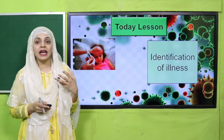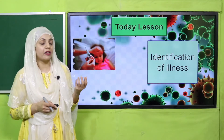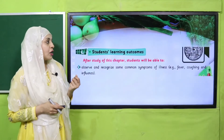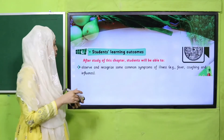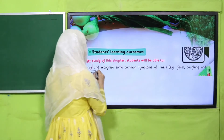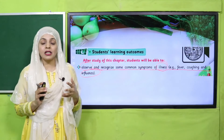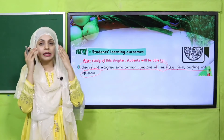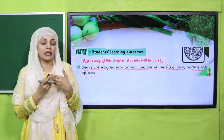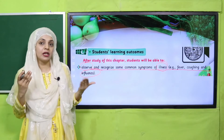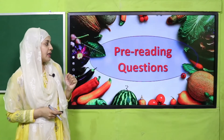Today we will identify different diseases and illnesses. By the end of today's lecture, all students will be able to observe and recognize some common symptoms of illnesses like fever, coughing, and influenza. We will observe what happens when we have coughing — lots of cough — and sneezing when we have flu, along with headache and watery eyes. These are symptoms of different diseases.